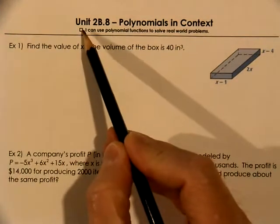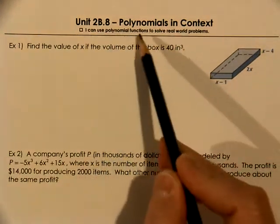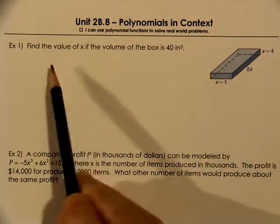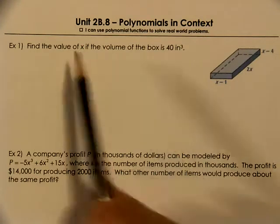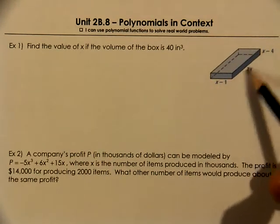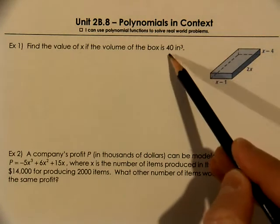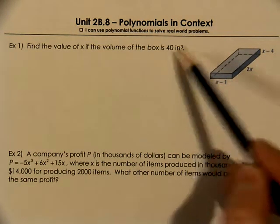This is Algebra 2 with Trigg, working on Unit 2B.8. We're dealing with polynomials and story problems. We're looking here, we want to find the value of x that would help us calculate the dimensions of our prism to have a volume of 40.